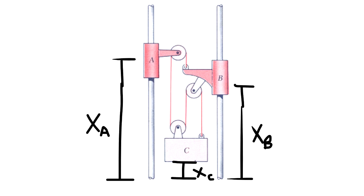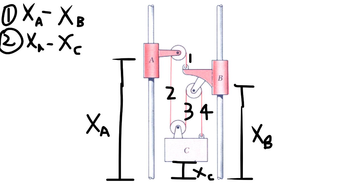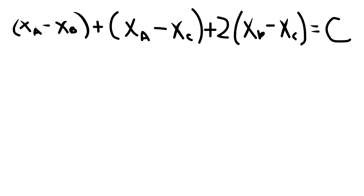Now that we have these positions, let's try to develop an equation for the total length of the cable at any given time. We have to worry about segments 1, 2, 3, and 4 of the cable. We can express segment 1 as being X sub A minus X sub B. We can express segment 2 as being X sub A minus X sub C. Finally, we can express segments 3 and 4 as being both X sub B minus X sub C. We can express the total length of the cable as being the sum of all of these.